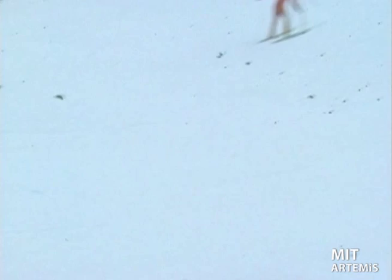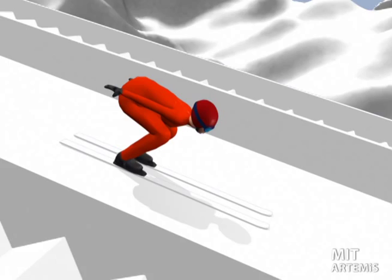Let's start with the simplest part. The top portion of the inrun is straight, and physics tells us that the acceleration of the skier depends on the slope. But what is slope?